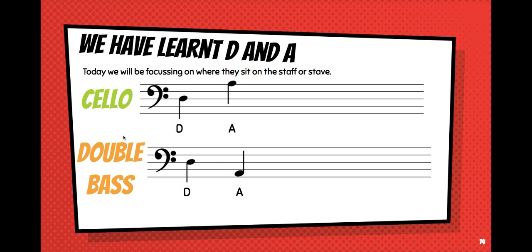If I'm playing the cello, my clef is called a bass clef. To read a D, it sits on the middle line, or the third line — the first, the second, the third line. And if I'm to play an A, it sits not on the first, but actually on the top line, or the fifth line, because we count from the bottom.